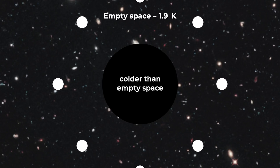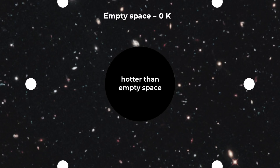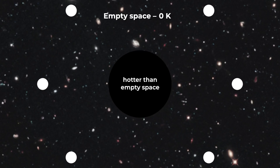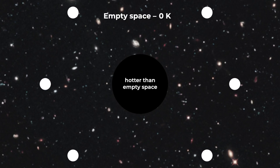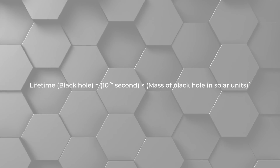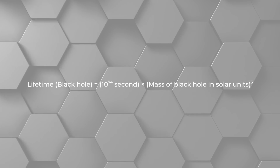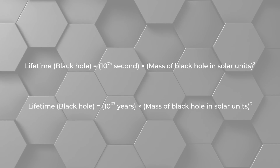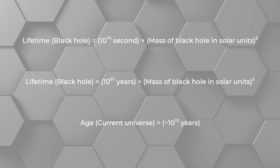That means black holes will absorb more energy from space than they emit. That will be true for a long time, but eventually the expanding universe will drop the temperature of space below the temperature of black holes. At that point they will emit more radiation than they absorb. Since E equals mc squared, the black hole will lose mass. We can calculate the lifetime of a black hole: it is about 10 to the 74 seconds times the mass of the black hole in solar masses, cubed — or about 10 to the 67 years. The lifetime of the universe so far is only 10 to the 10 years, so it's going to take a very long time.